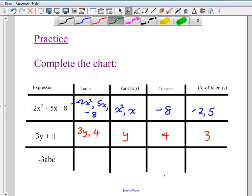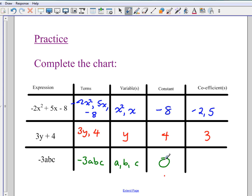Now this last one is a little trickier. There is only one term. It is negative 3abc. So be careful with that. There are three variables, however: a, b, and c. Now in this case, there is no number without a letter. So the constant is 0. And the coefficient would be negative 3.